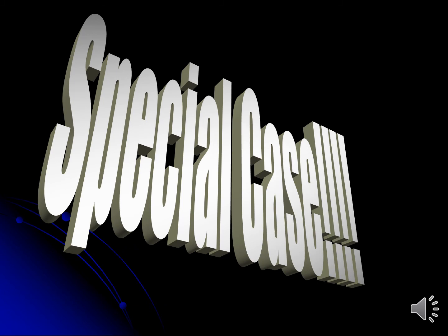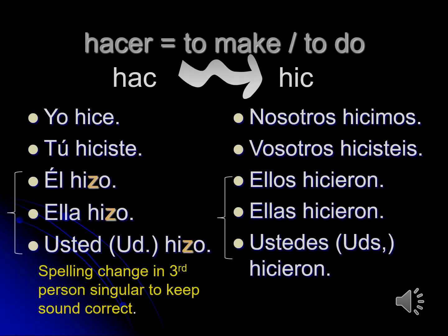There's one more very common stem-changing verb, and that's a special case. The verb hacer — the stem becomes IS, and in order to keep the sound correct, in the third person singular the C is changed to a Z. So you have: yo hice, tú hiciste, él hizo, ella hizo, usted hizo, nosotros hicimos, vosotros hicisteis, ellos hicieron, ellas hicieron, ustedes hicieron.